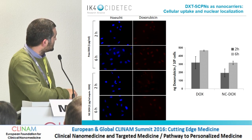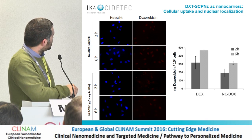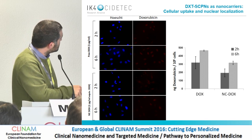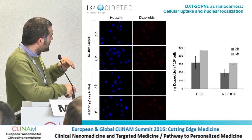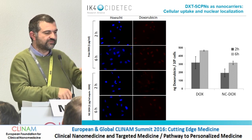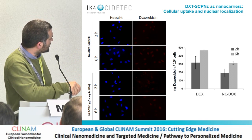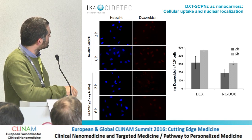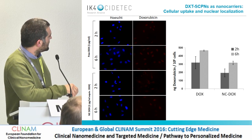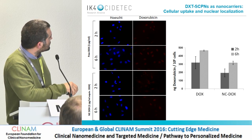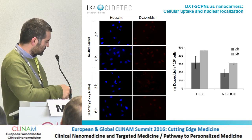We also made some preliminary cellular uptake tests. At the same concentration of doxorubicin, the free drug as hydrochloride is able — in two hours — to go directly to the nucleus. The nanoparticle also delivers the drug to the nucleus, but the process is much slower. At six hours, quantification by UV analysis shows that free doxorubicin is already at high levels at two hours and then increases slowly to six hours, whereas the nanoparticle shows slower kinetics.